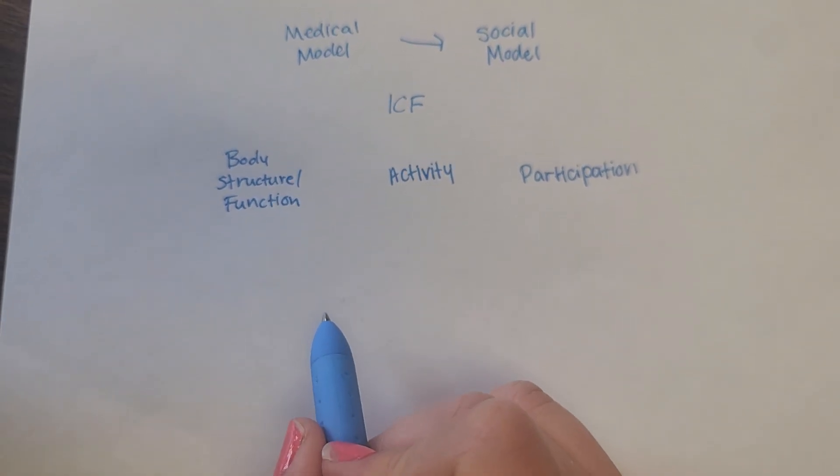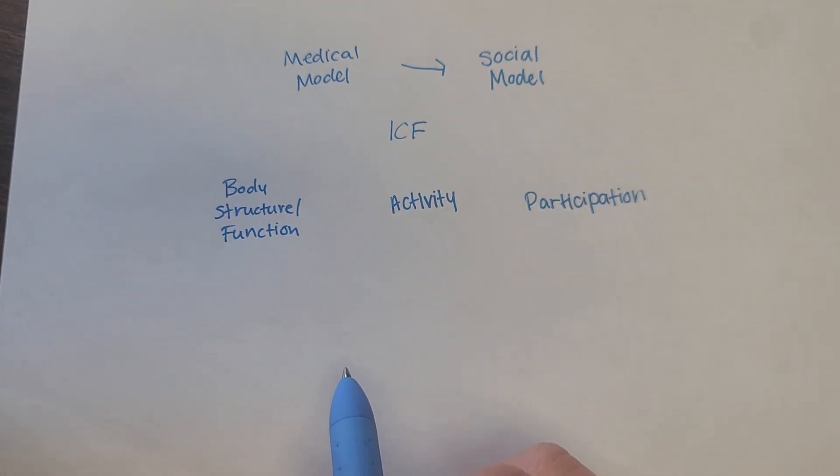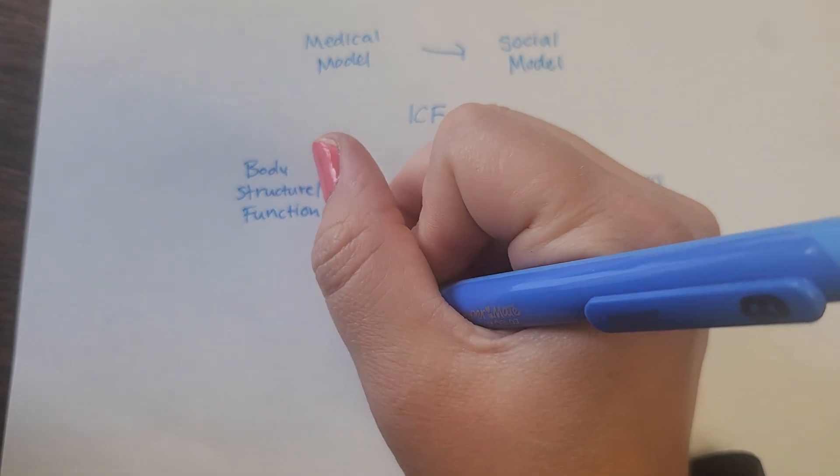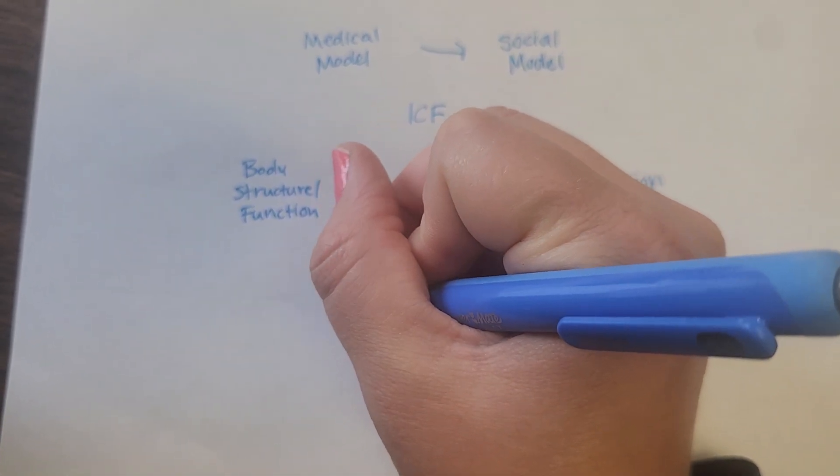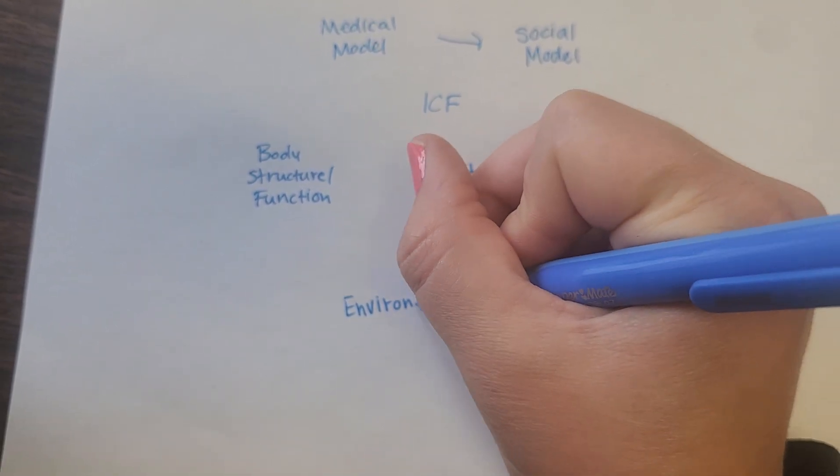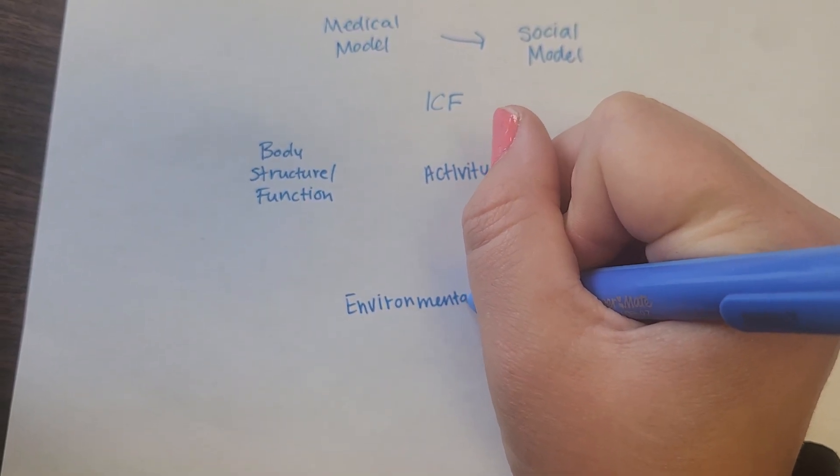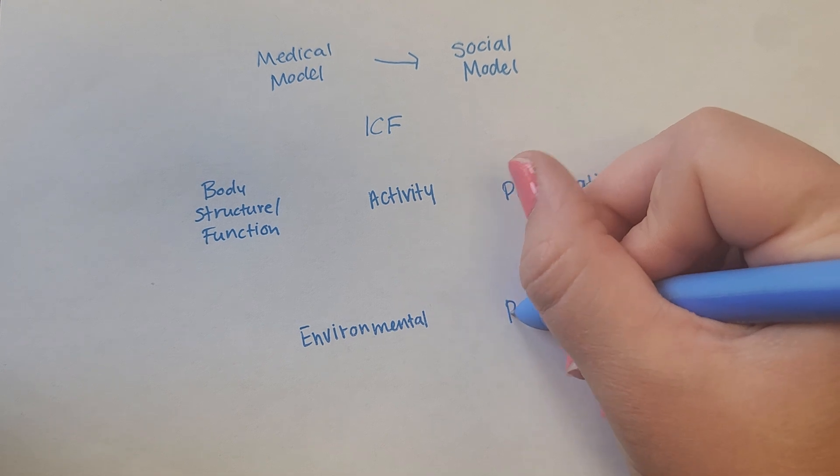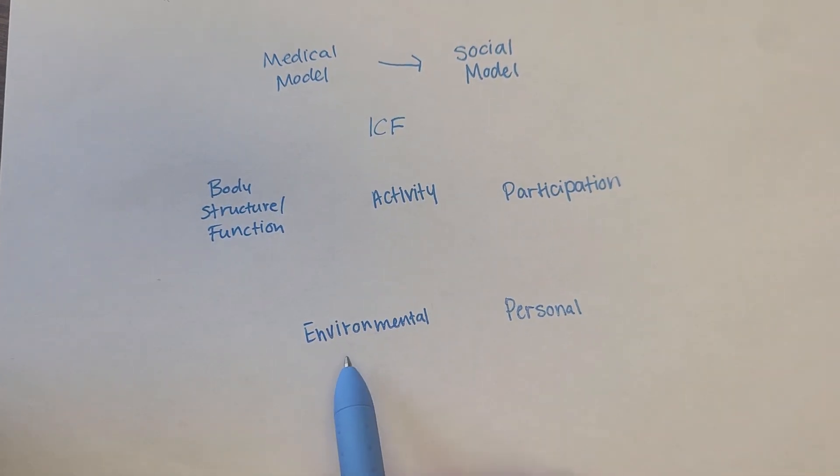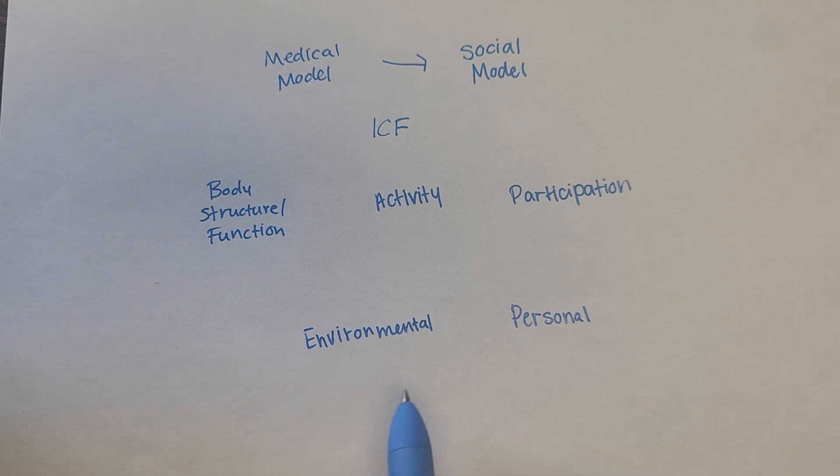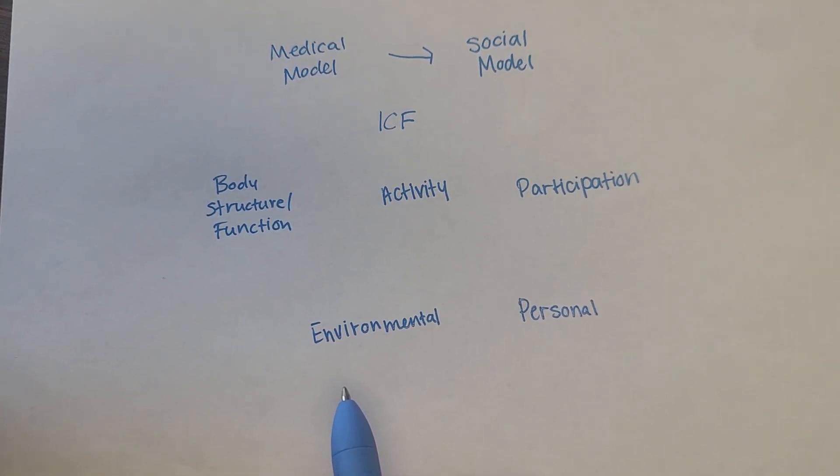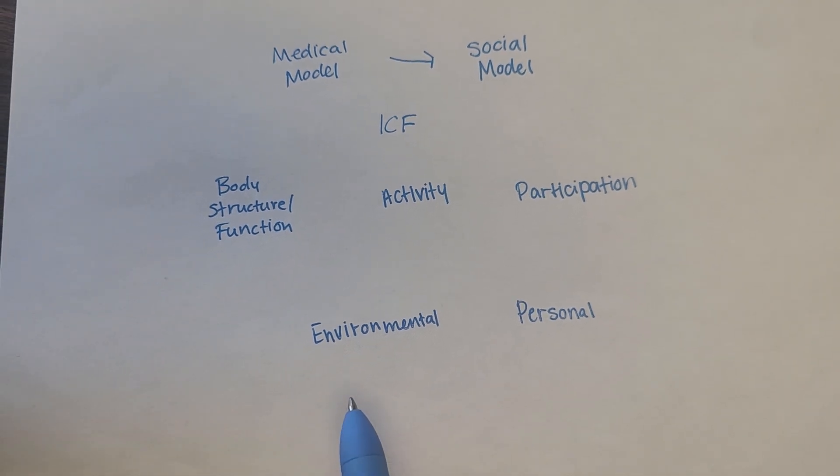So then, down at the bottom of your chart, I'm not going to draw out all of how it looks exactly, but we have kind of two separate factors, and one is environmental factors, and the other is personal factors. Environmental factors are anything in your environment that makes your perception of your illness or disability better or worse.